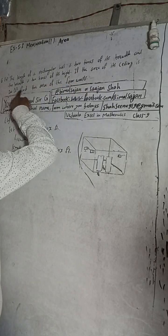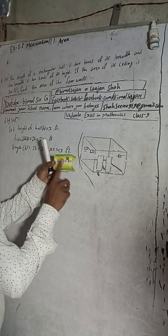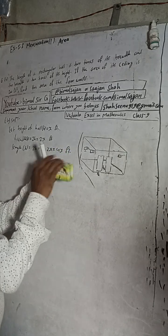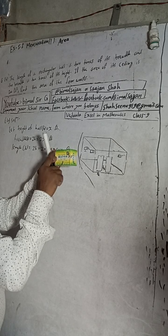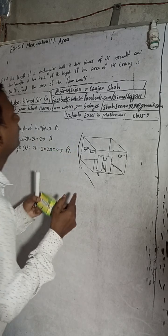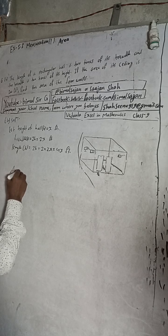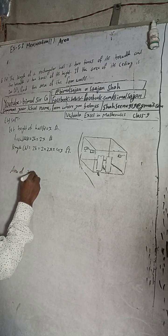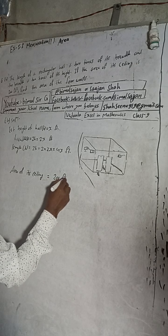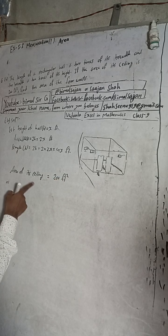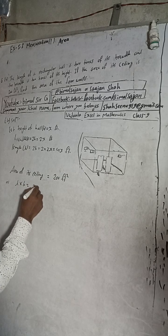If the area of the ceiling is given, the area of the ceiling and the area of the floor are the same. Suppose this is our rectangular hall — this is the ceiling and this is the floor. The ceiling has length and breadth. So the area of the ceiling equals length times breadth, which is equal to 200 square feet.